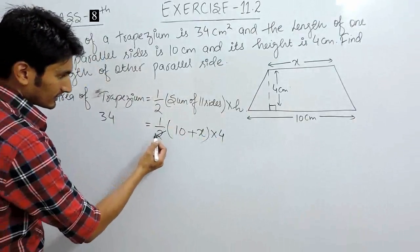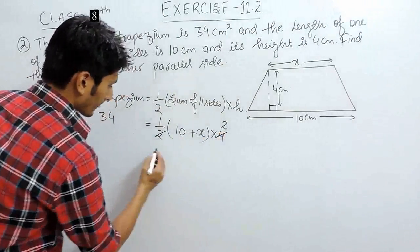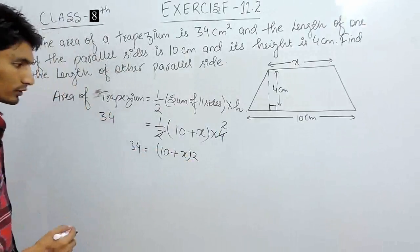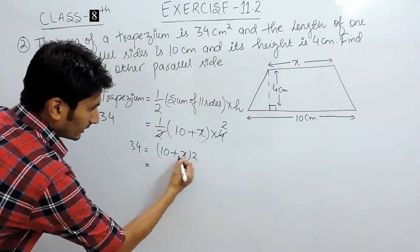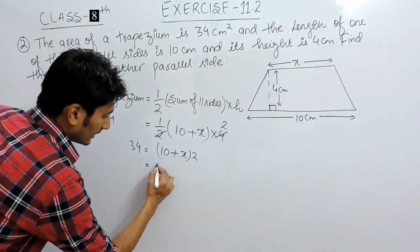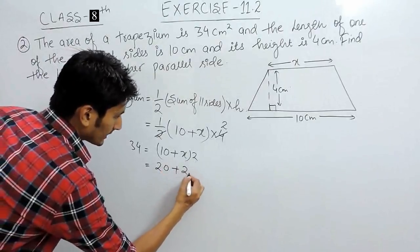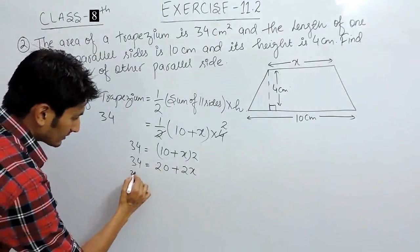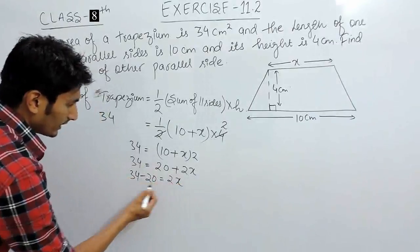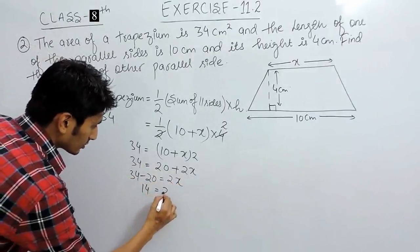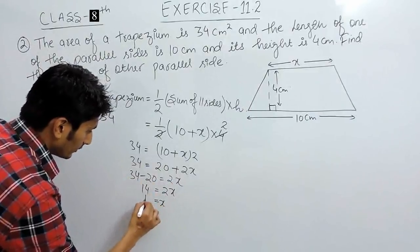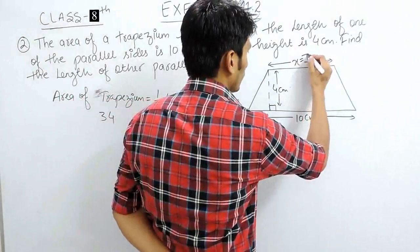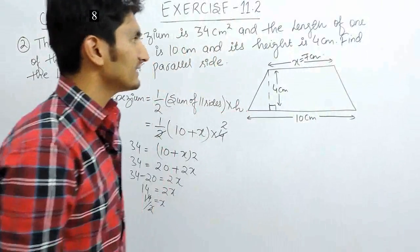Solving this equation: the 4 and 2 cancel, giving (10 + x) multiplied by 2 equals 34. Opening the bracket, multiply 2 with both terms: 2 times 10 is 20, and 2 times x is 2x, so 20 + 2x = 34. Shifting the constant to the left-hand side: 34 minus 20 equals 2x, which gives 14 = 2x, so x equals 14 divided by 2, which is 7. The value of x is 7 cm.